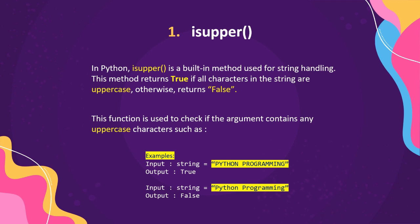The first method is isupper. In Python, isupper is a built-in method used for string handling. This method returns true if all the characters in the string are uppercase, otherwise it returns false. For example, with the input string 'python programming' in all uppercase characters, it will check if all characters are uppercase and return true; if not, it returns false.